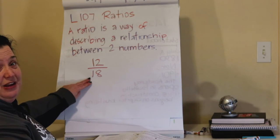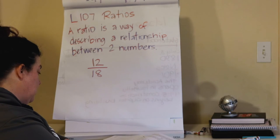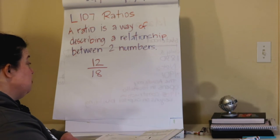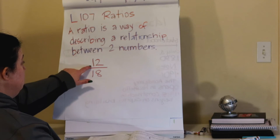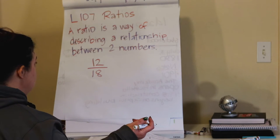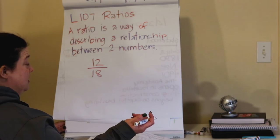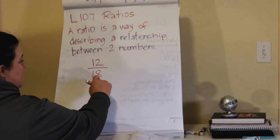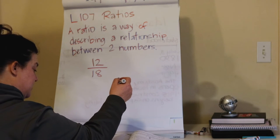So 12 to 18 looks like this. Then we do our usual reducing by finding the biggest or greatest common factor. 12 and 18? Yeah, they both have 6 in them.